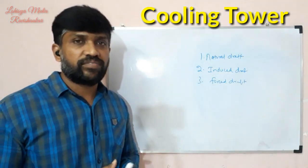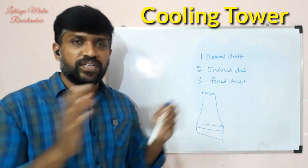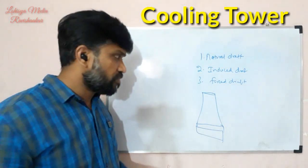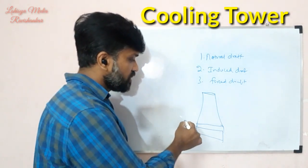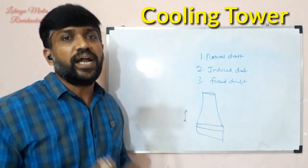First, natural draft. We basically use natural draft in power plants. The shape is like a large hyperbolic tower. Natural drafts use basic heat principles — heat always rises. The heat will travel upward through the tower naturally.